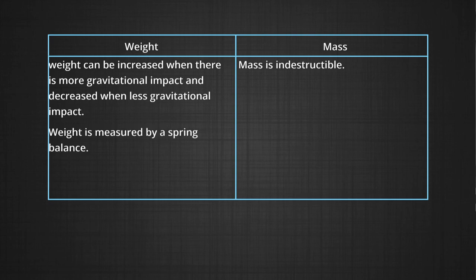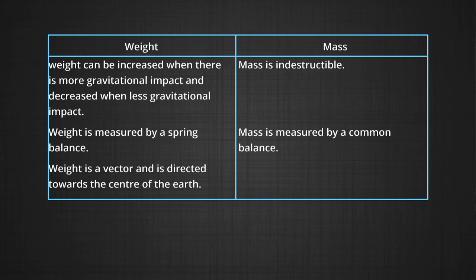Weight is measured by a spring balance, while mass is measured by a common balance. Weight is a vector and is directed towards the centre of the earth, while mass is a scalar and has no direction dependency.